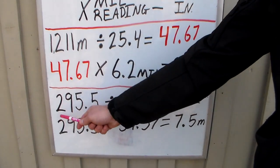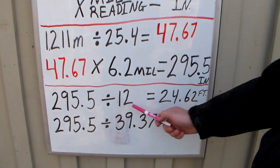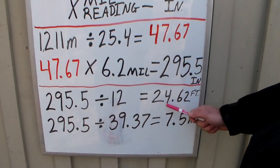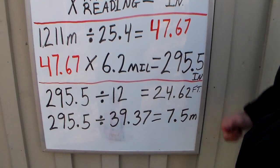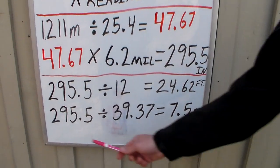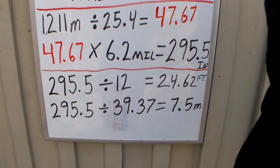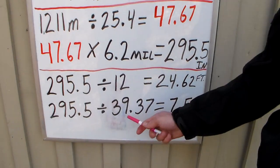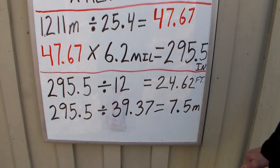So let's convert that over. 295.5 divided by 12 is 24.62 feet wide. So now we know that building is 24.5 feet wide. You can also convert it over to meters if you'd rather work it in meters. 295.5 divided by 39.37 is 7.5 meters wide.